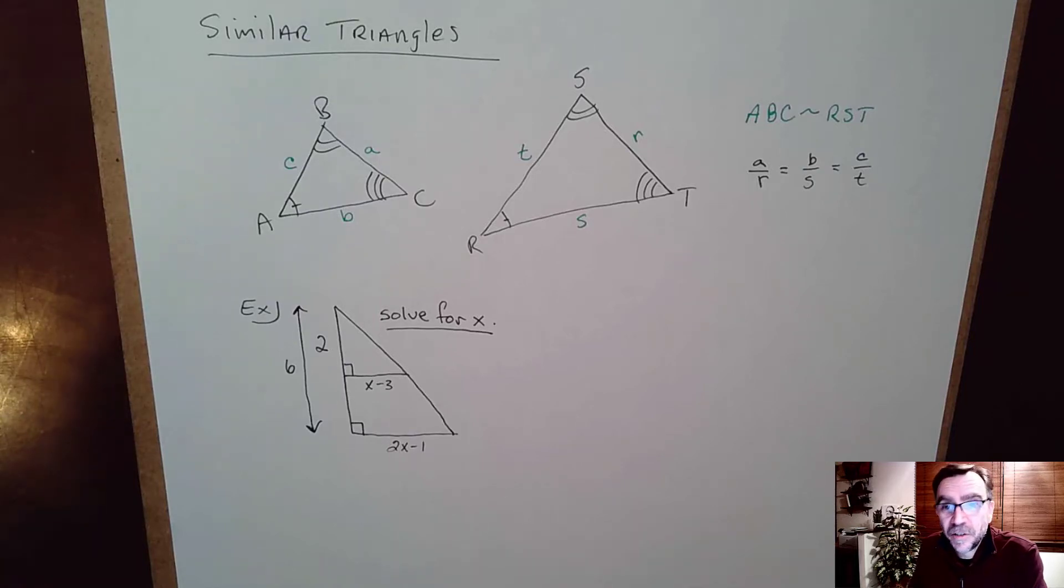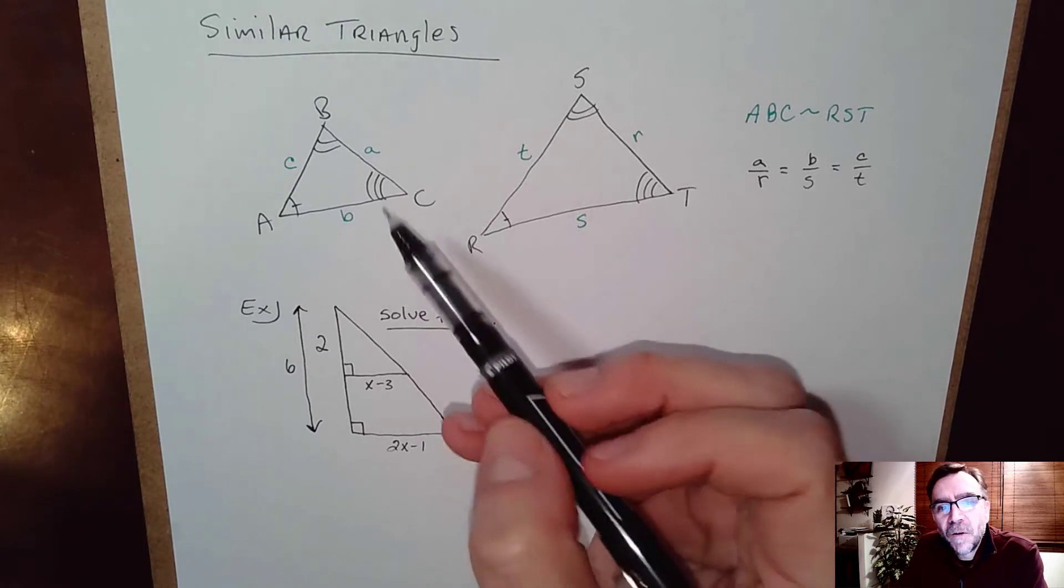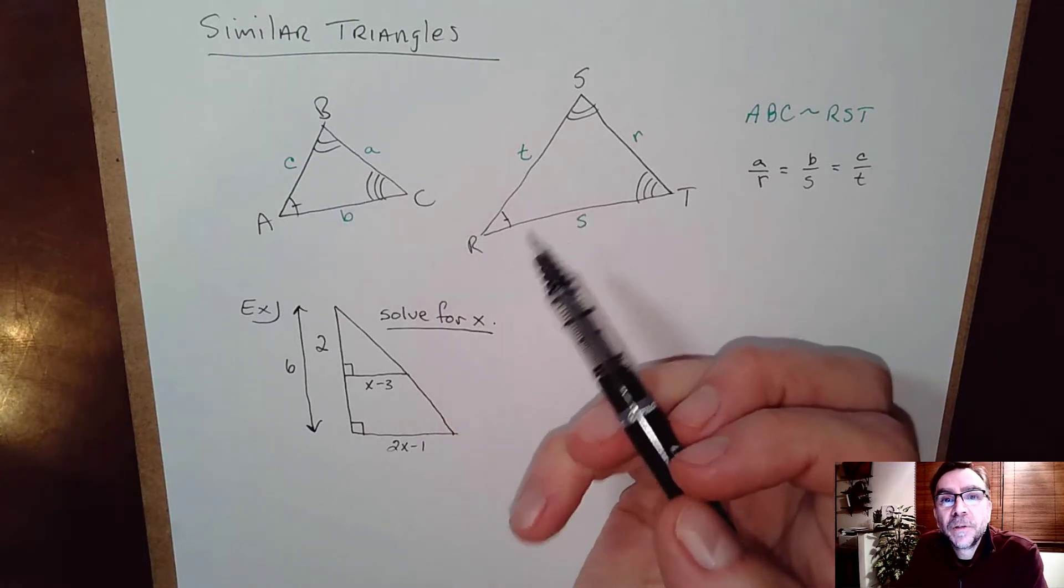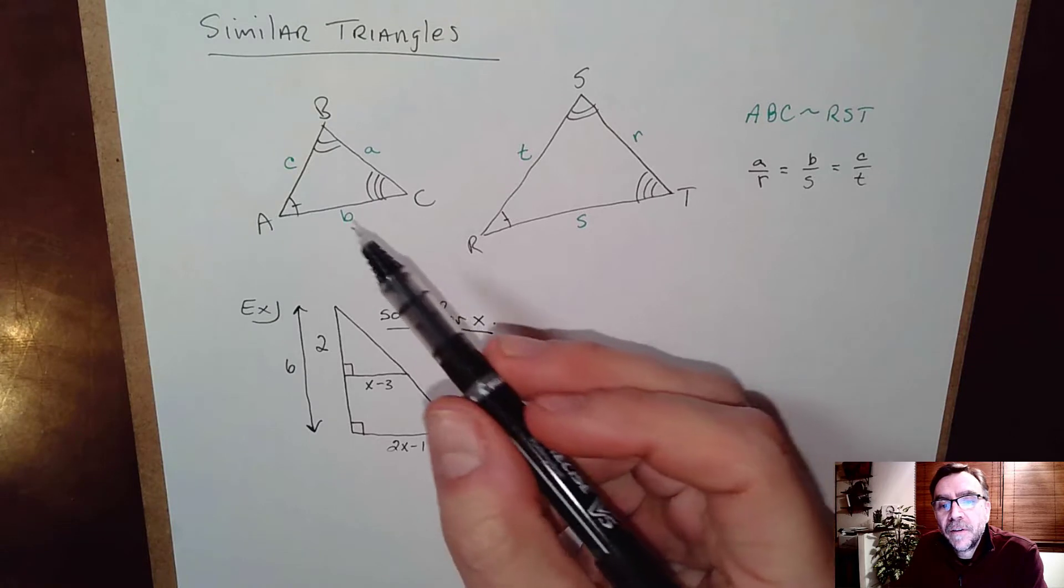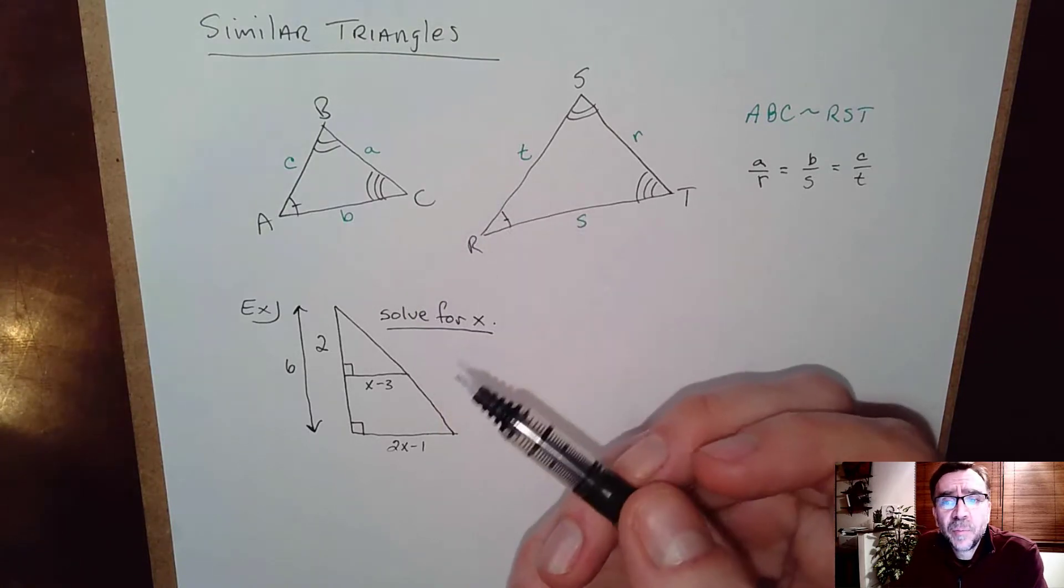Okay here we're going to talk a little bit about similar triangles. You know you have similar triangles if all of the angles are congruent or equal. If all the angles are equal then all the sides have to be in proportion.